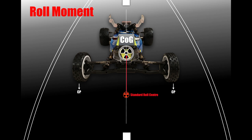The distance between the standard roll centre and the centre of gravity is indicated by this red line here. This creates an arc through which the car is rolling, and the difference in roll centre height to the centre of gravity will dictate the size of that arc, which will in turn dictate how much roll your car has. It's all making use of the contact patch, indicated by the white arrows underneath the tyres.